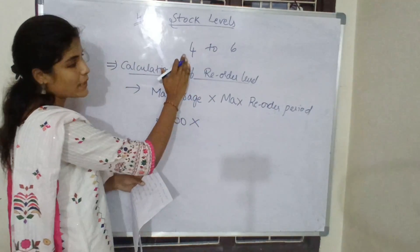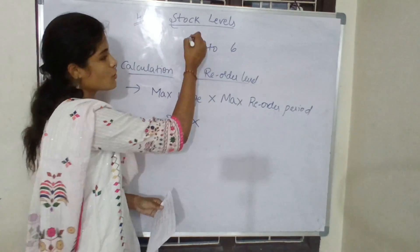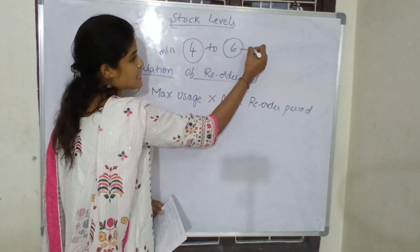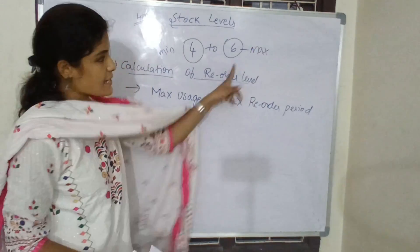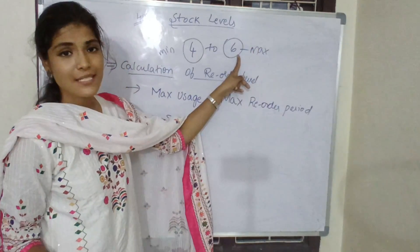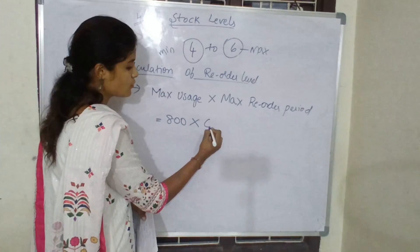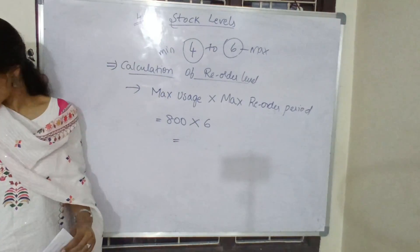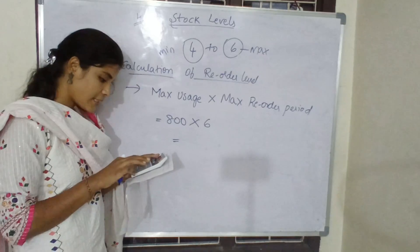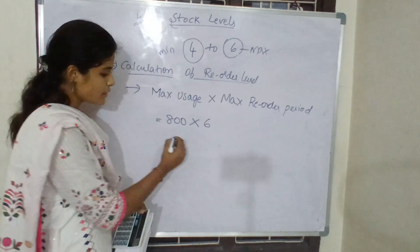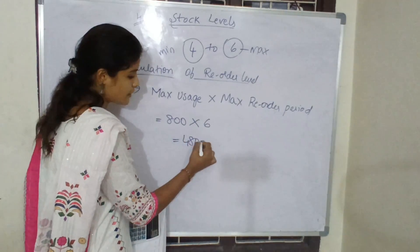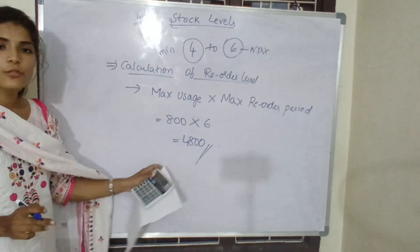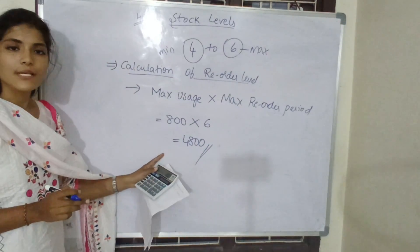So reorder period is 4 to 6 weeks. 4 is minimum, 6 is maximum. So maximum reorder period is 6 weeks. So 800 into 6 is nothing but 4,800. Reorder level is equal to 4,800.